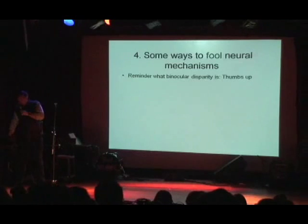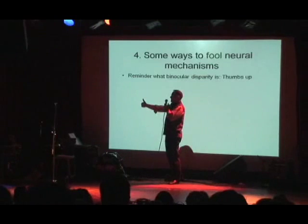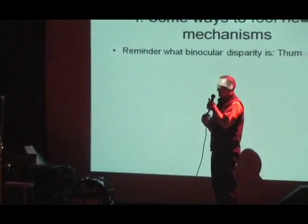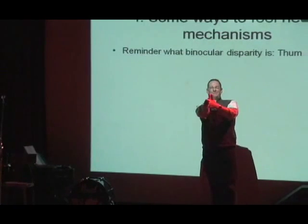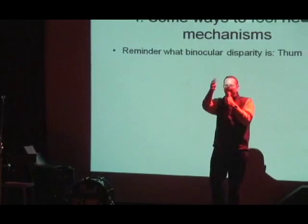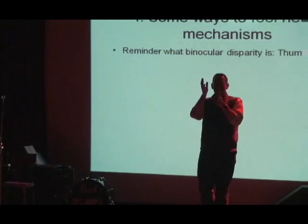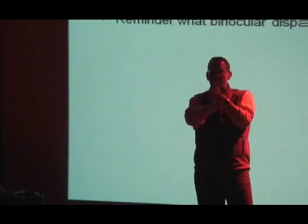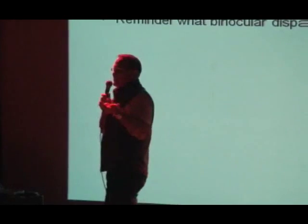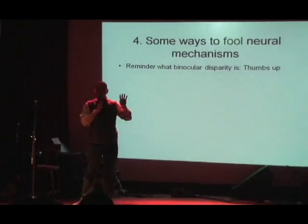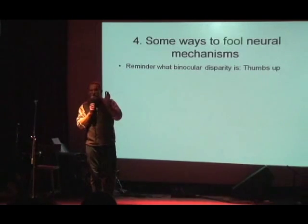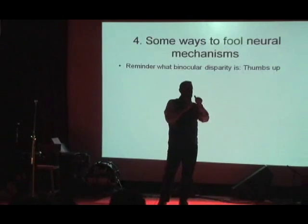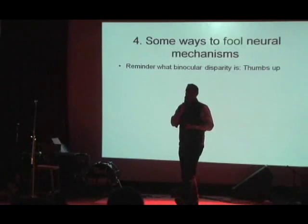Here's a little reminder about binocular disparity. Most of you have probably done this before: if you put up one thumb at arm's length and your other thumb closer, then wink your eyes back and forth. Look at how your two thumbs jump past each other. Keep looking at the far thumb, and you can see how the front thumb is jumping back and forth. It's jumping because your left eye and your right eye are seeing the scene from different positions.